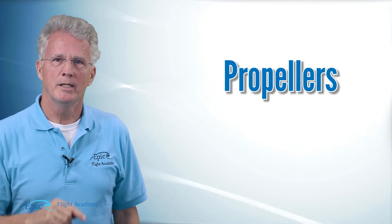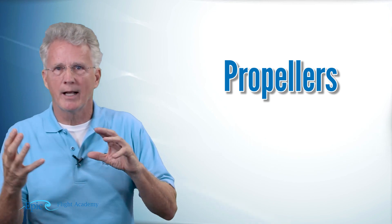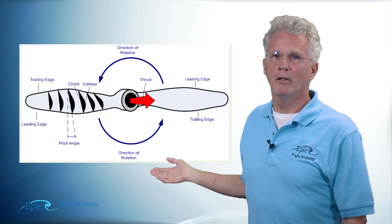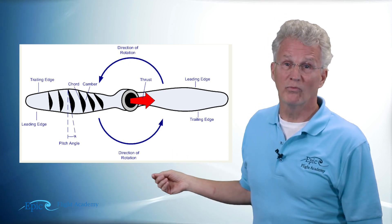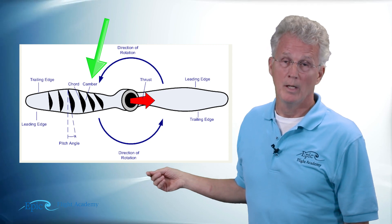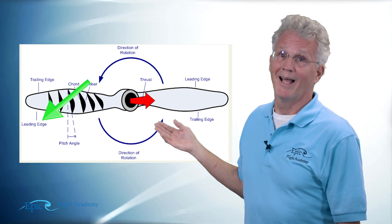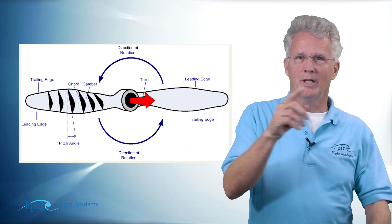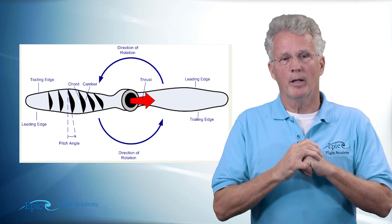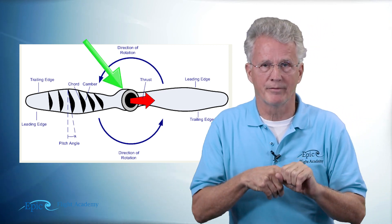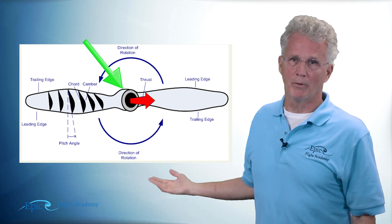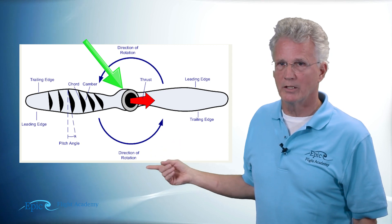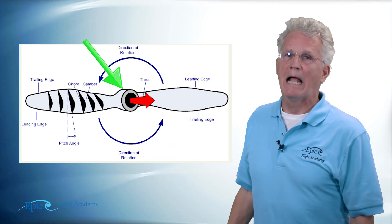If we take a look at propellers, we need to name a few parts to understand exactly how this thing works. The propeller is an airfoil, and the airfoil has a camber, a leading edge, and a trailing edge. The propeller is a rotating airfoil that rotates around the center shaft.